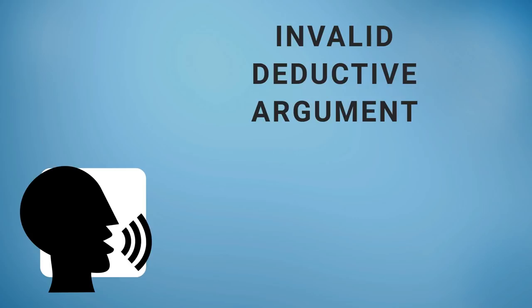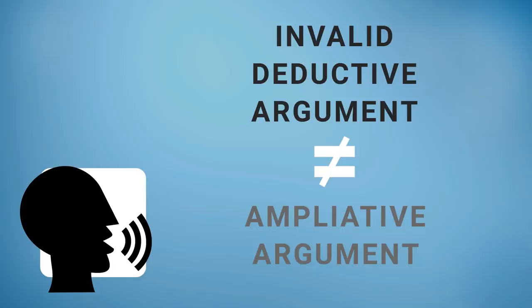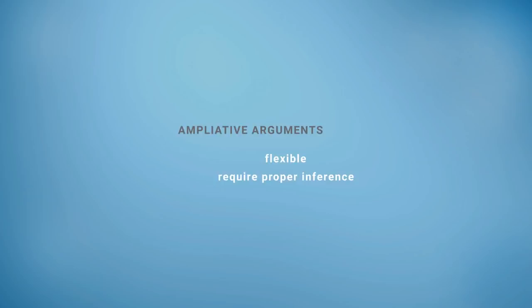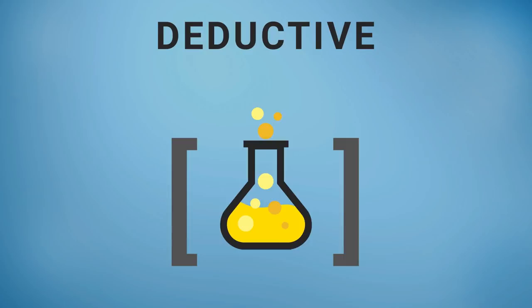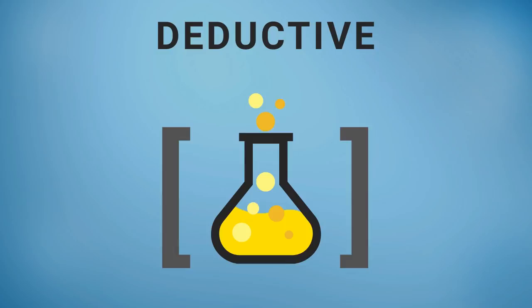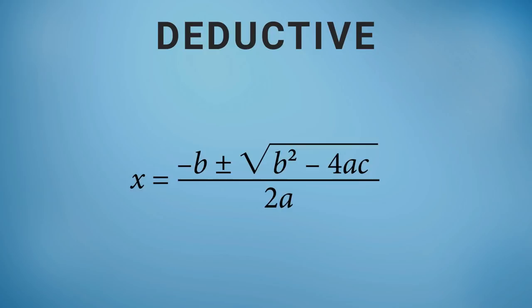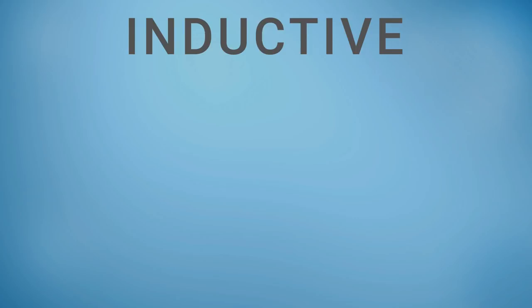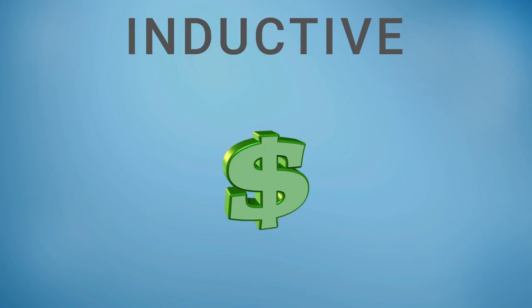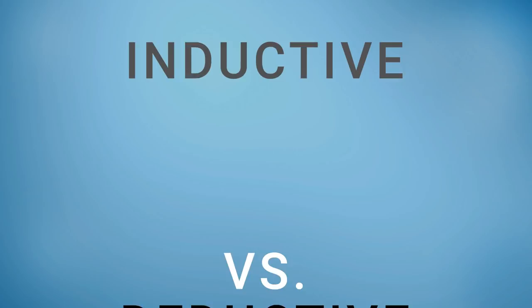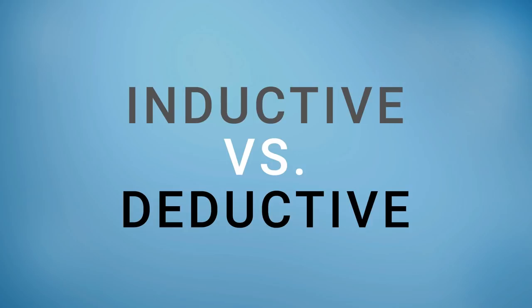Deductive arguments are based on objectivity and inevitability. Ampliative arguments allow for more flexibility but require proper inference. Deductive arguments have the advantage of giving us everything we need to know simply within our premises, even if implicitly, and play an important role in math and science, especially the hard sciences. But it's inductive reasoning and ampliative arguments that allow for creative thinking and consideration of 'what if' — think of practicing medicine and diagnosing a disease, solving economic problems, or developing a marketing strategy. While inductive reasoning creates a risk for loss of objectivity, it pays off by making use of more open-ended thinking, problem-solving, and consideration for outside factors and possibilities, which are crucial to countless fields.